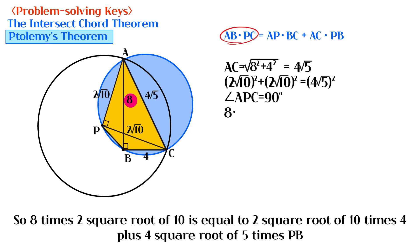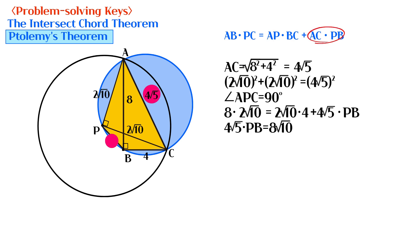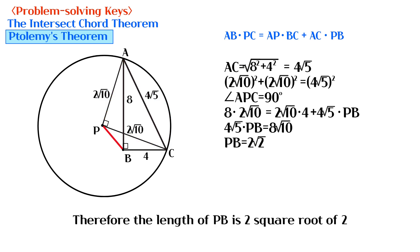So 8 times 2 square root of 10 is equal to 2 square root of 10 times 4 plus 4 square root of 5 times PB. Therefore the length of PB is 2 square root of 2.